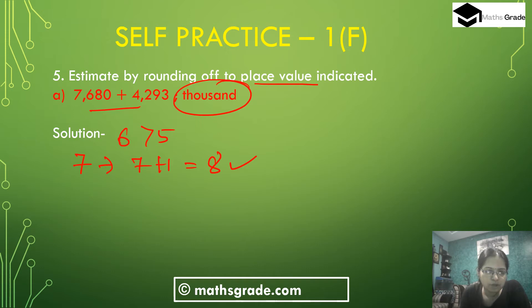Now the hundreds digit 6 changes to 0, the tens digit 8 changes to 0, and the units digit 0 remains 0. So 7,680 rounded to the nearest thousand is 8,000.